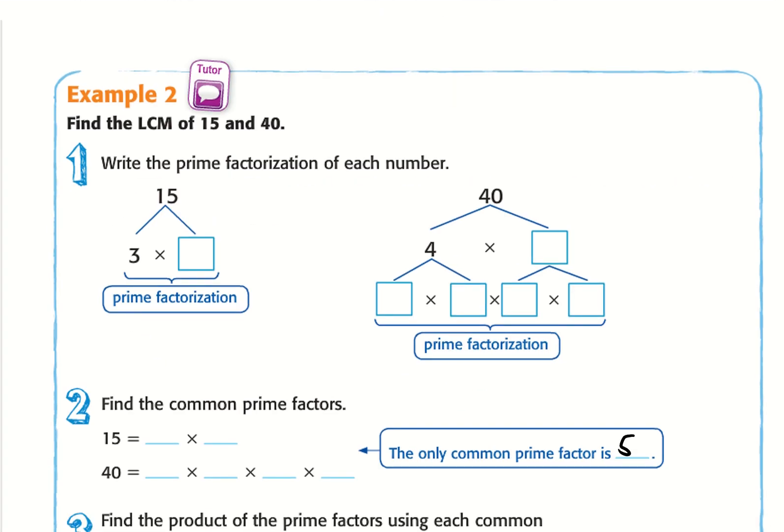So the other example is example two. And this is using prime factorization to find the least common multiple, which is not always the easiest method.